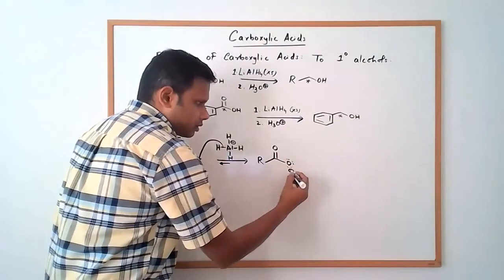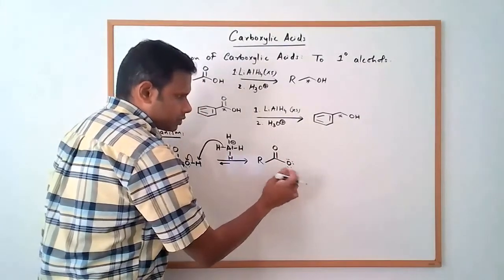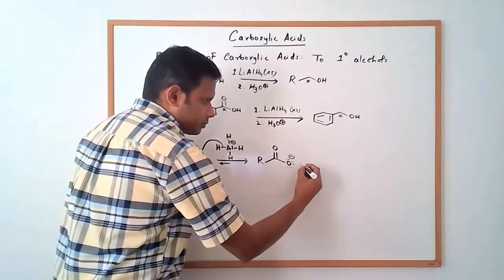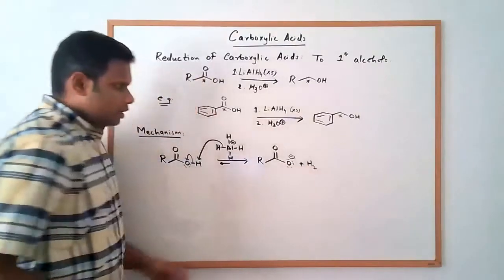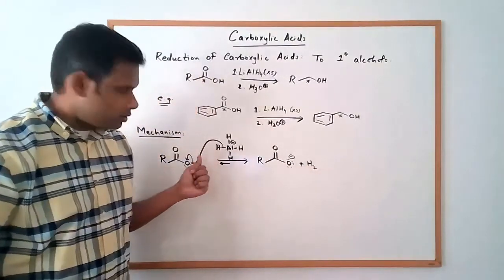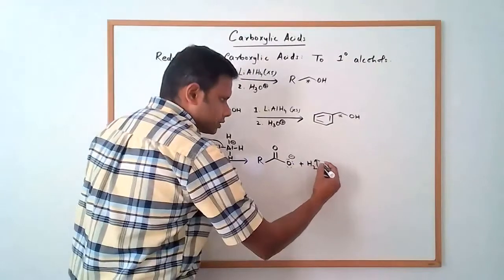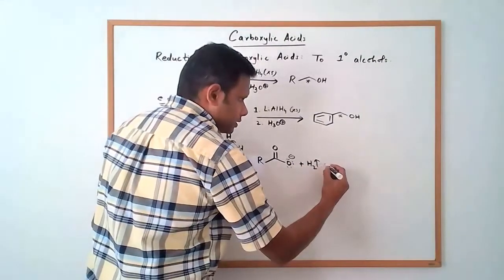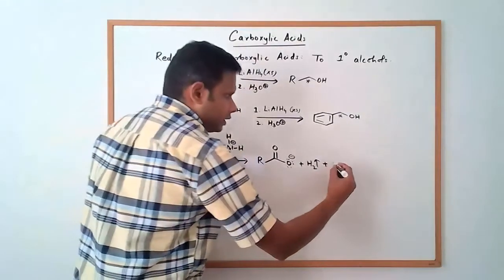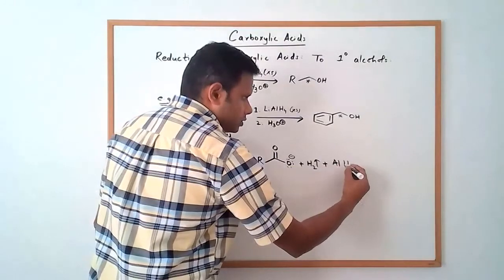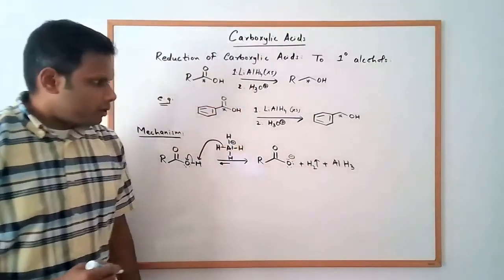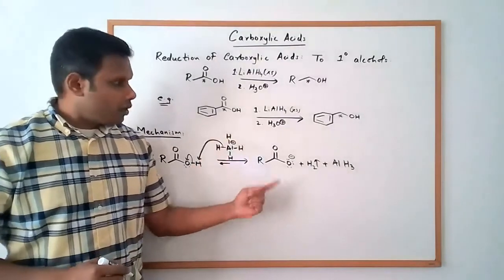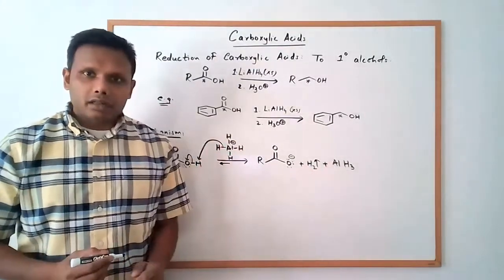You get the carboxylate, with the negative charge on the oxygen — it doesn't matter where you put it. You also get H₂ gas, which just leaves. And you're left with AlH₃ — that's the aluminum hydride minus one hydride. So that's the first step of the mechanism.